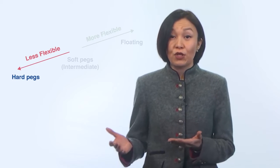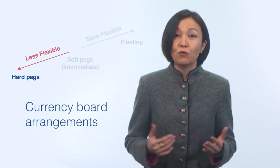Another category in the group of hard pegs is currency board arrangements. In this system, the commitment to the fixed exchange rate regime is supported by legislation that makes the peg irrevocable, at least in principle, combined with restrictions on how much currency the central bank can issue.